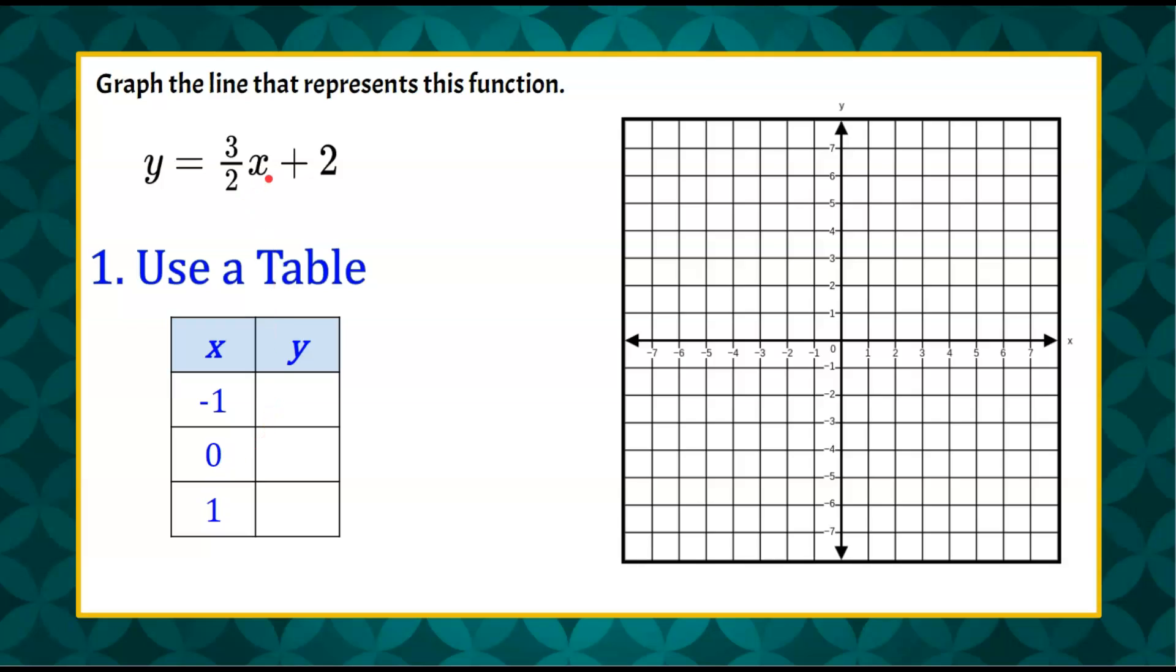So negative 1, 0, and 1 are usually my first go-tos because those are really easy numbers to work with when you're plugging in for x and evaluating. However, in this equation, or this function, we have a denominator of 2. So we're going to change our rule of thumb, and we're going to use our denominator of 2 to guide our inputs so that we can have integer outputs.